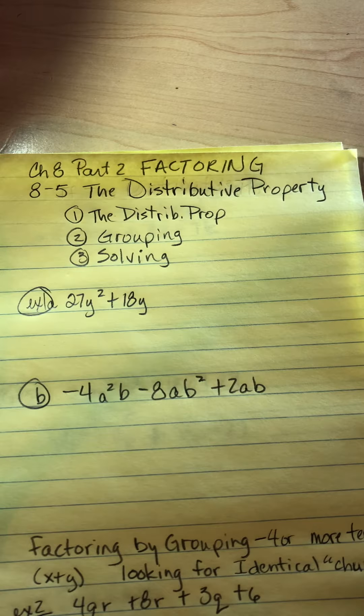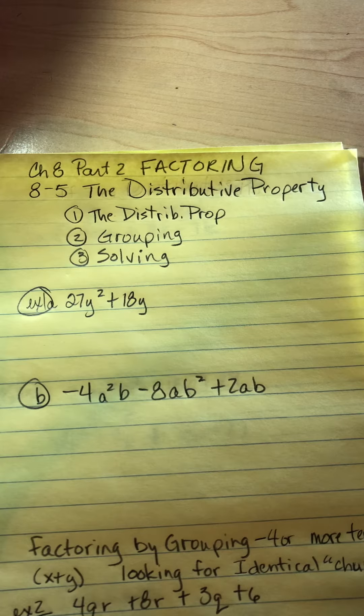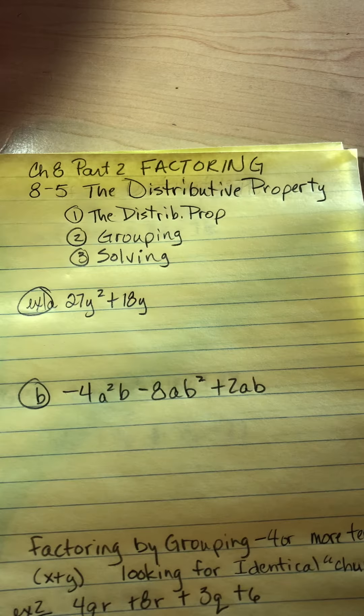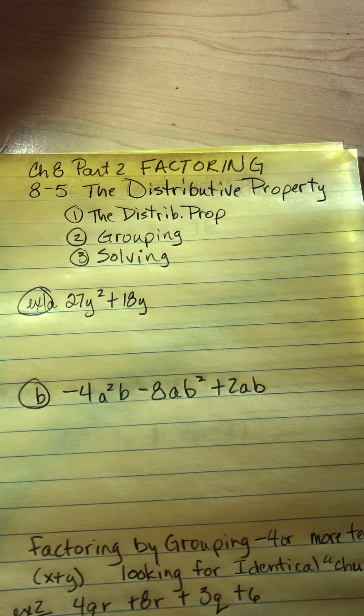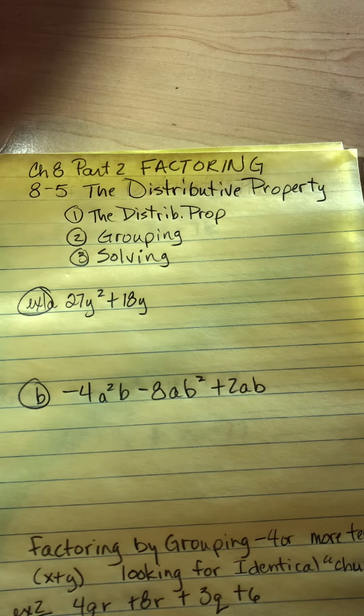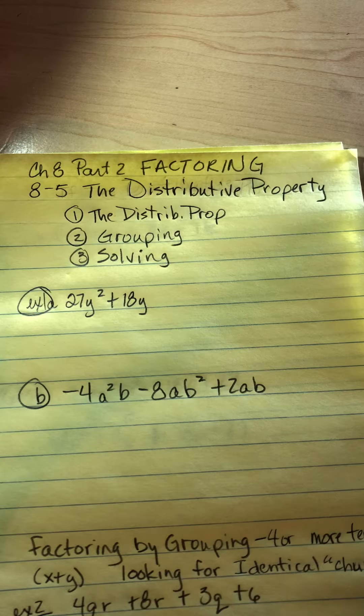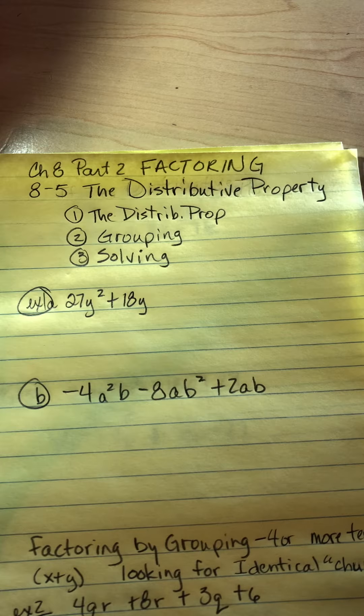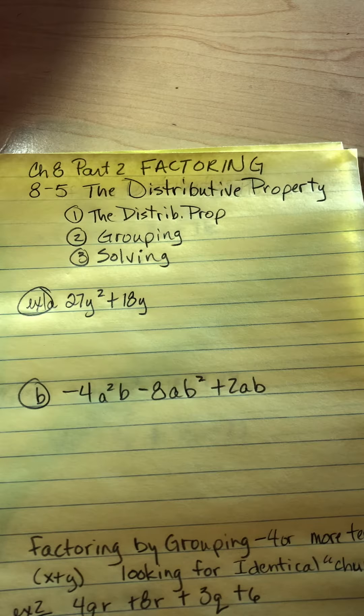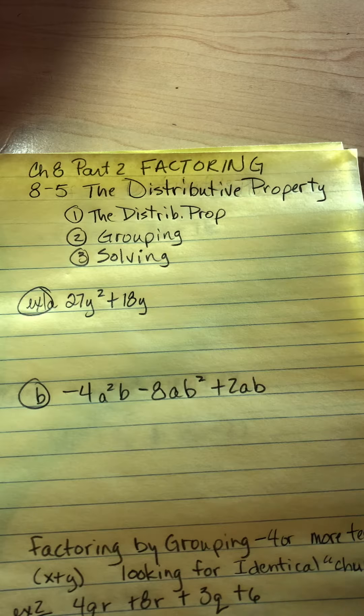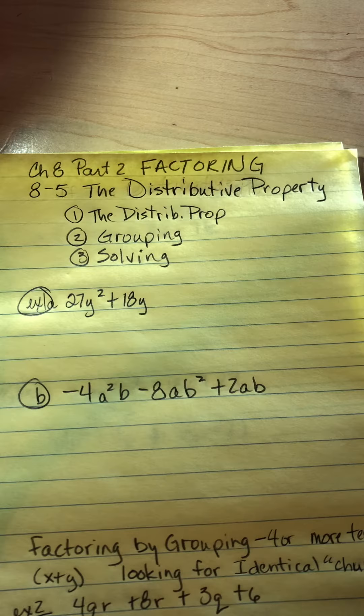Good morning, Algebra! We're starting the second half of chapter 8, part 2, Factoring. 8-5 is the distributive property and three things we're going to talk about. We're going to talk about the distributive property, undistributing and dividing out a common factor, factoring by grouping, and then solving once it's factored.